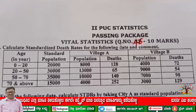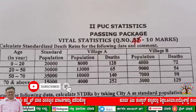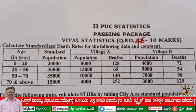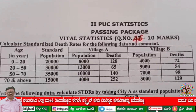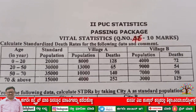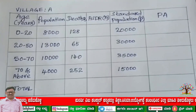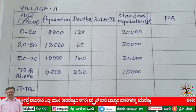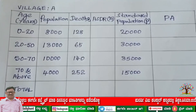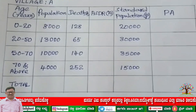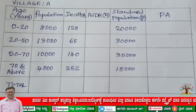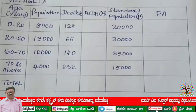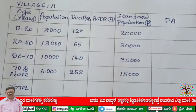For village A, the columns are age, population, deaths. Then you have to calculate ASDR — age specific death rate — and the next column is standard population. The next column is the product of standard population and ASDR. In the table, the ASDR column — write capital A inside the bracket — and the standard population column — write capital P inside the bracket.